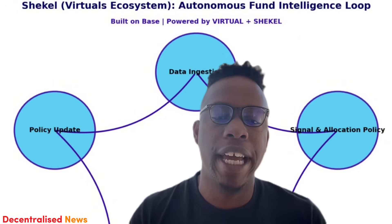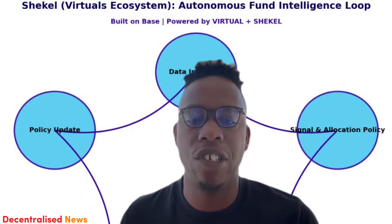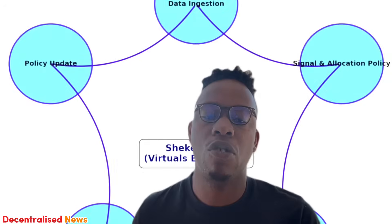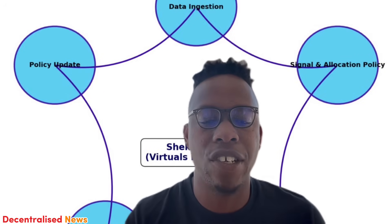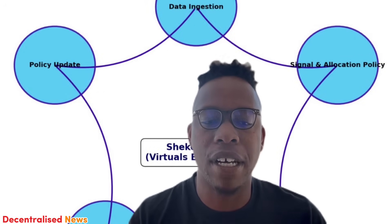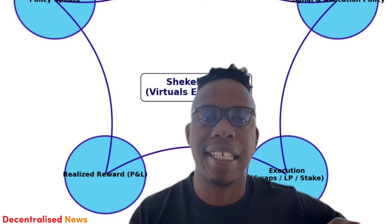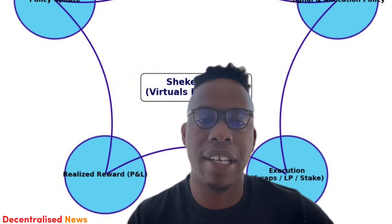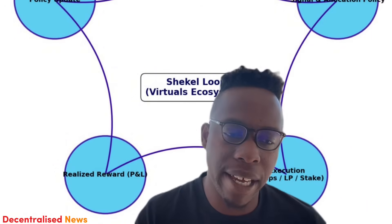The flagship agent, Rabbi Shlomo, executes autonomously on Base inside a Shekel-style fund. Agent loops look like data ingestion, signal allocation, policy execution — whether that's swapping, LPs, or staking — then the realized reward, the policy update, and finally continuous learning.